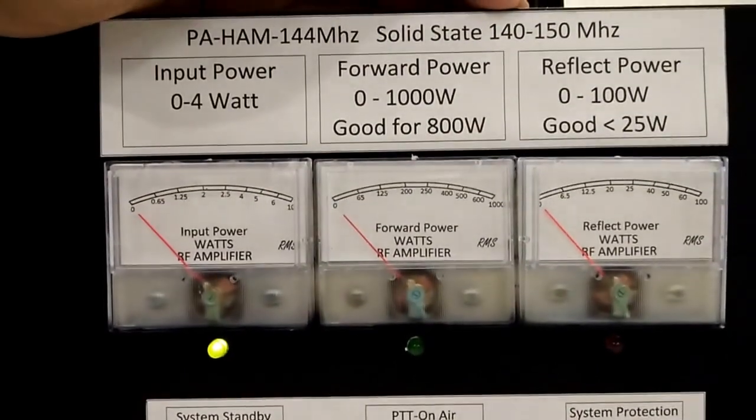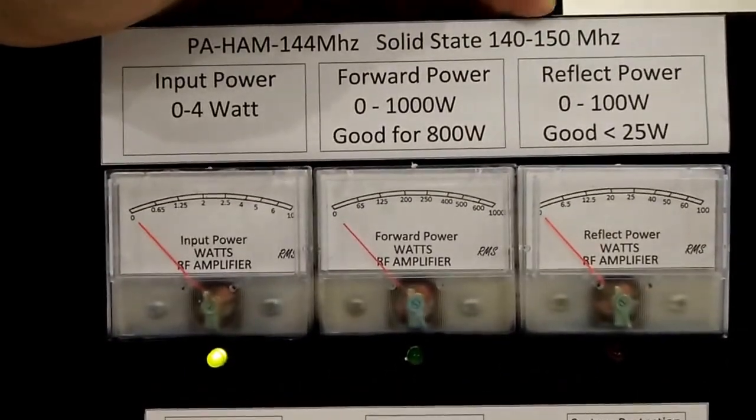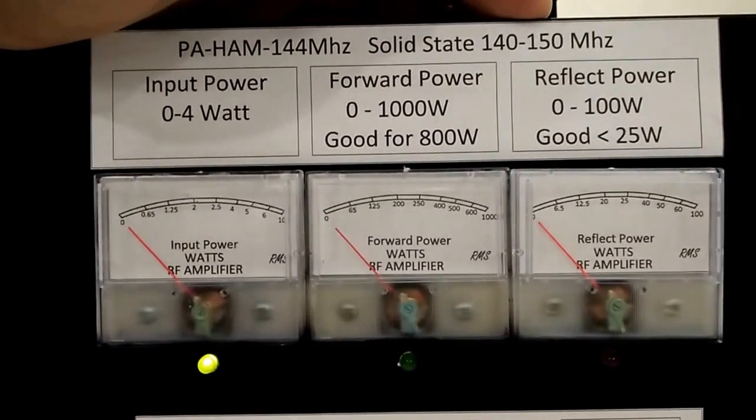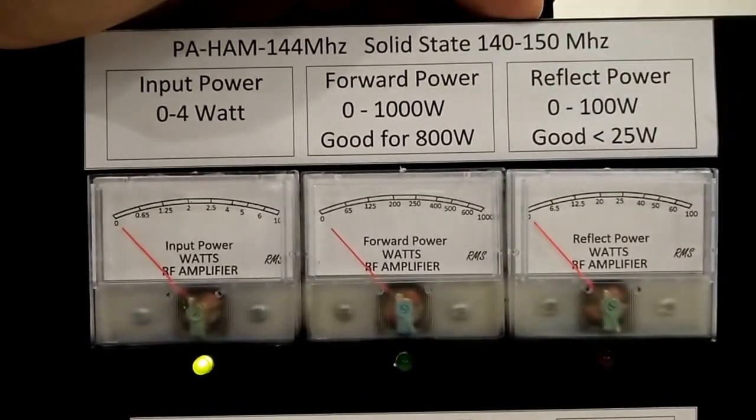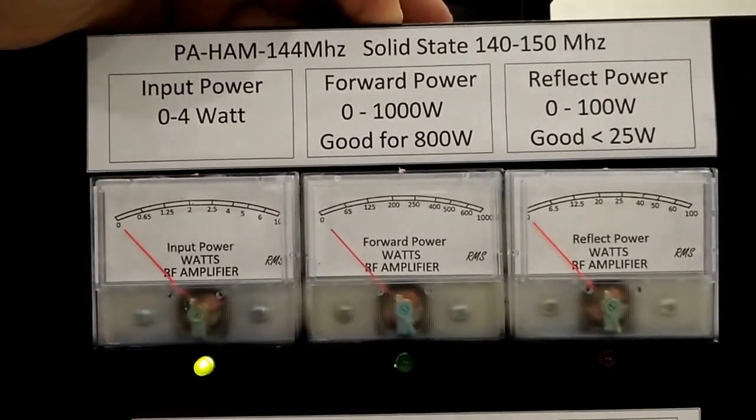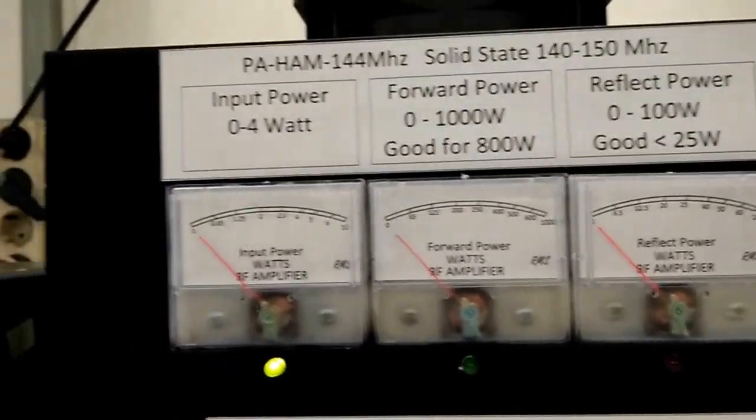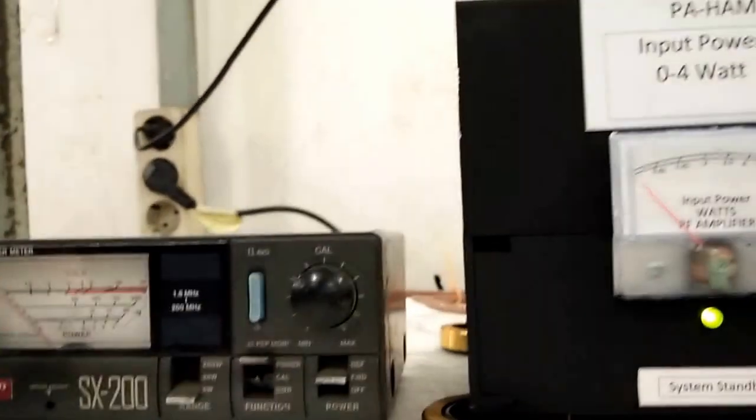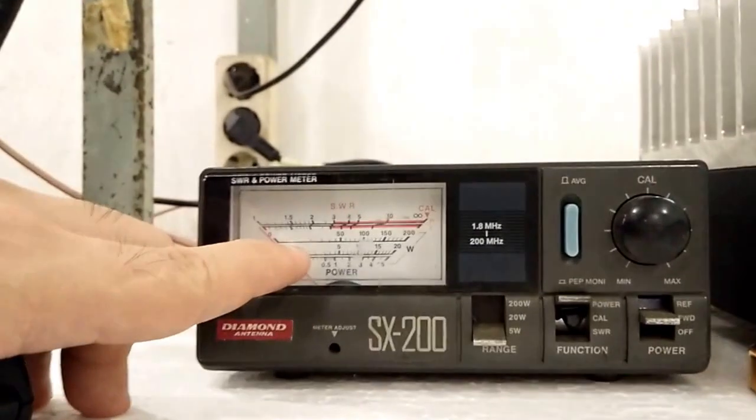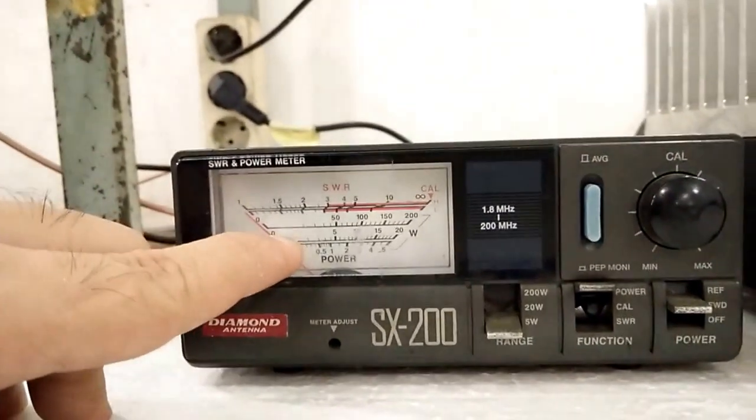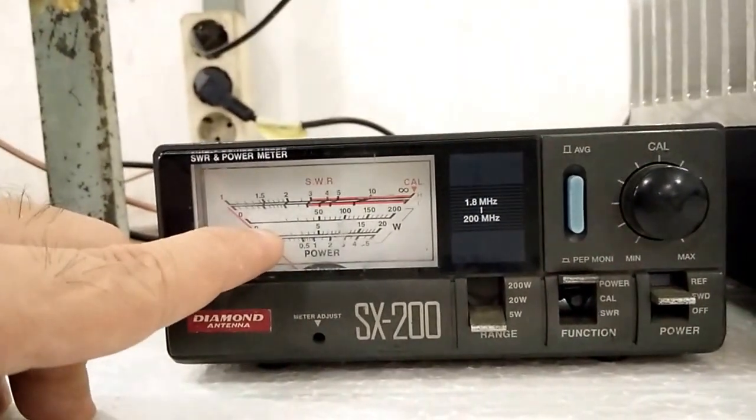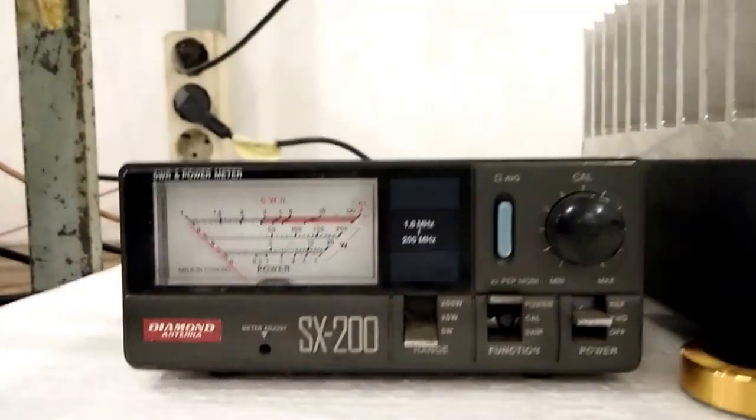This is the booster for 140 and 150 MHz for 2-meter band solid state. And this is the input meter. We are going to measure the input and the output using a power meter.